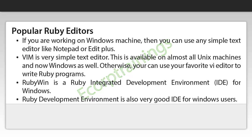To write your Ruby programs, you will need an editor. If you are working on a Windows machine, then you can use any simple text editor like Notepad or Edit Plus. Vi Improved is a very simple text editor, available on almost all Unix machines and now Windows as well. Otherwise, you can use your favorite Vi editor to write Ruby programs. Ruby Win is a Ruby integrated development environment for Windows. Ruby development environment is also a very good IDE for Windows users.